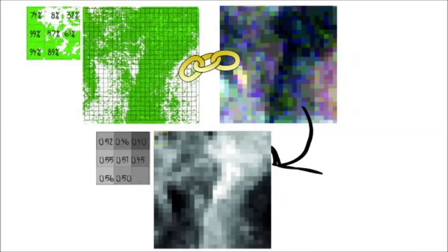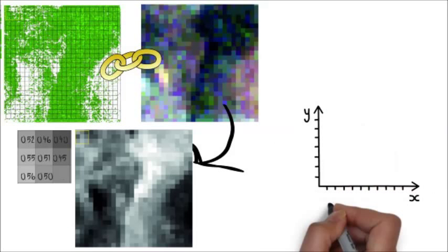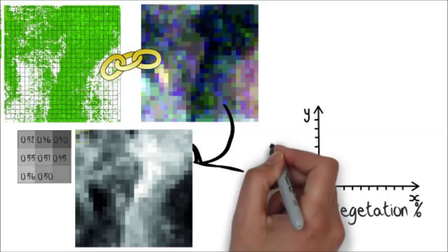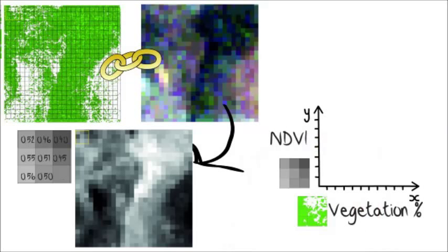We now correlate the NDVI that's contained within the lower spatial resolution image pixels with the percentage of vegetation determined using the higher spatial resolution classification.